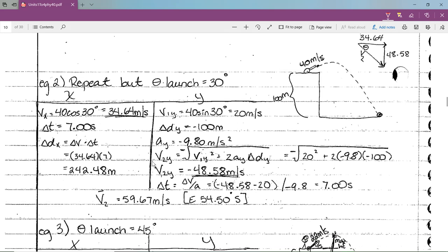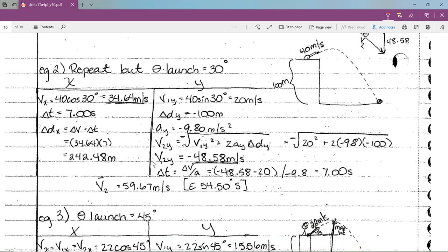Now let's repeat the example we were doing. But this time, the cannon is going to launch the cannonball 30 degrees above the x axis. My Vx is going to be 40 cosine of 30 degrees, 34.64. My y component is 20 meters per second, 40 times sine of 30.